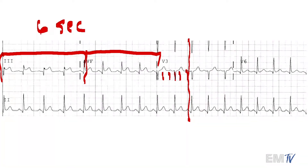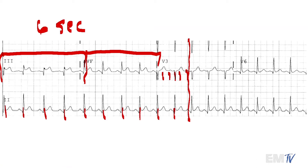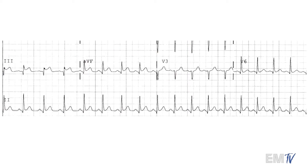Now all we need to do is count the QRS complexes and we can get our rate. I count 10, so with a six-second strip value, 10 times 10 is 100 beats per minute. The given heart rate in the scenario was 104, which is very, very close. Because the heart rate is 104 and this is an adult patient, this is a tachycardic rhythm.